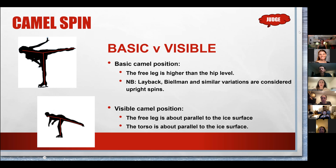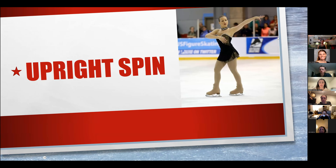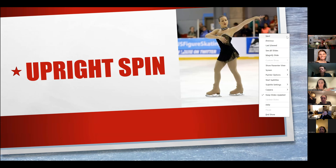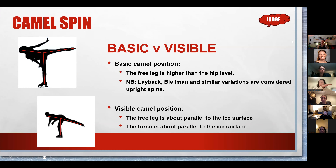One of the things we can award on for the GOEs is a clear position. If you're achieving that true basic position for the camel — a straight line from your head to your free leg — that's something we can reward as a clear position as long as it's well controlled. Whereas the visible position, if you have the drooping free leg, something we can deduct for is an aesthetic position, which has been added as something that can be deducted on.